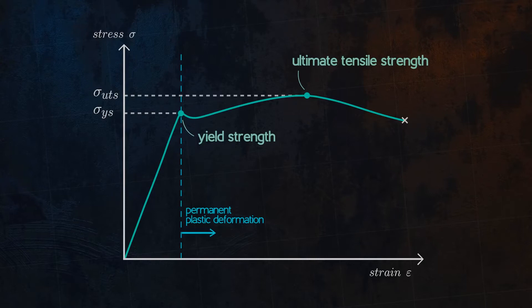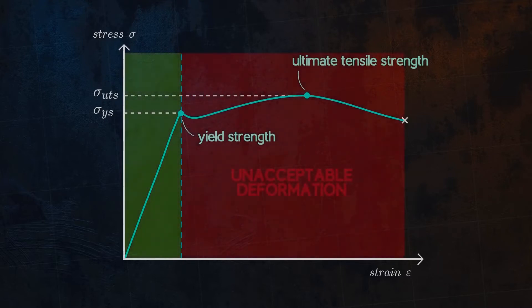Many structures and components are designed to ensure that they only deform elastically. This makes the yield strength a commonly used criteria for defining failure in engineering design codes.